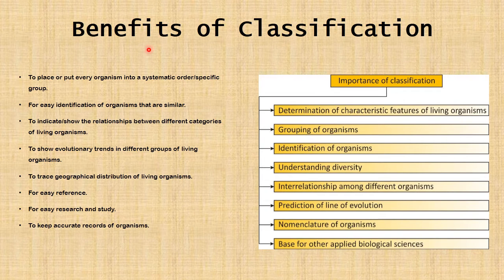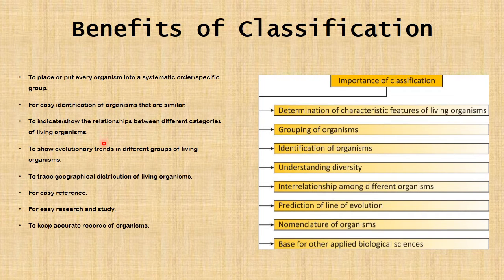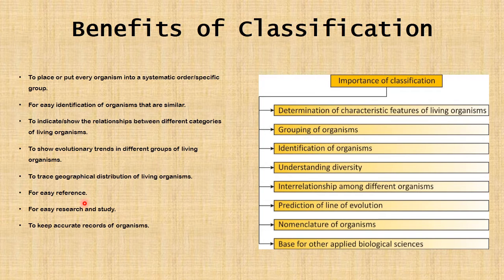We are going to look at the importance and benefits of classification. One benefit is to place every organism in a systematic order or specific group. Others include: easy identification of organisms that are similar; to indicate the relationship between different categories of living organisms; to show evolutionary trends in different groups; to trace geographical distribution of living organisms; for easy reference; for easy research and study; and to keep accurate records of organisms.